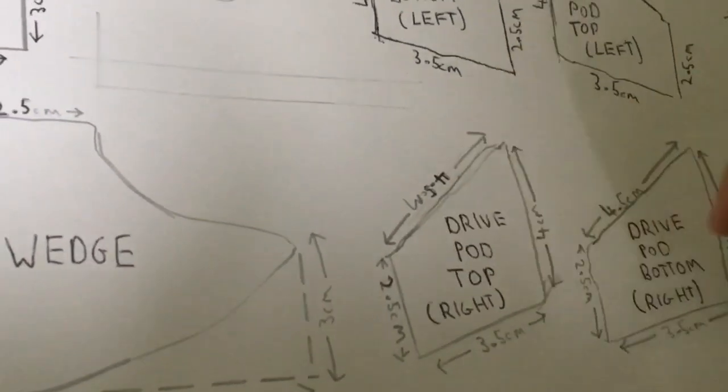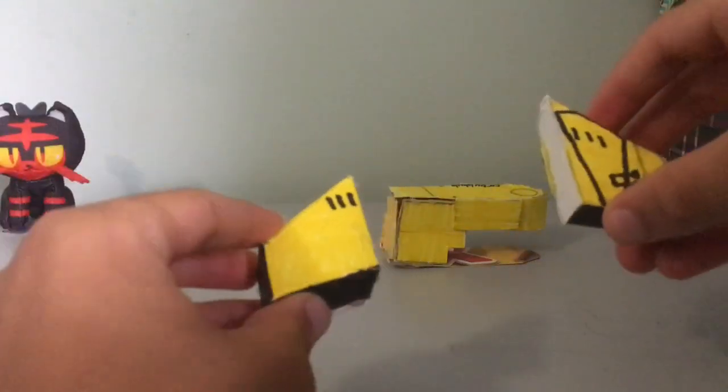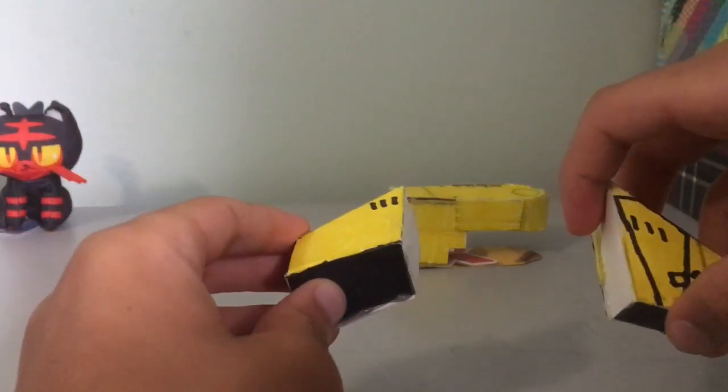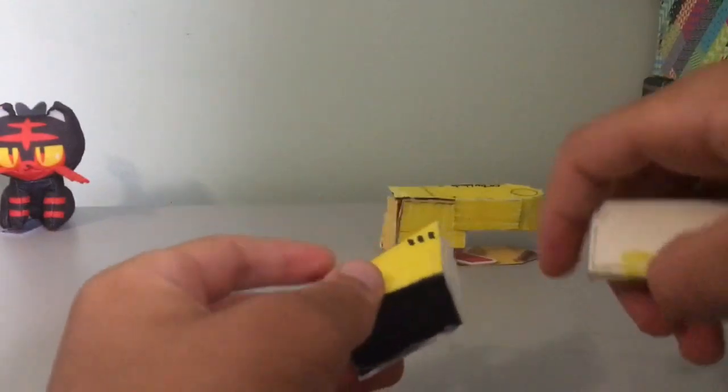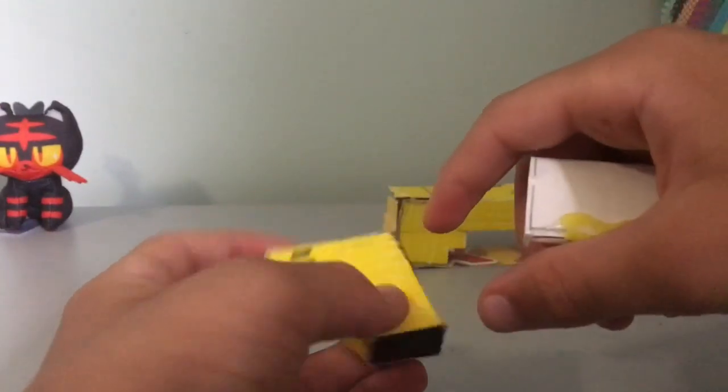They're just going to attach the top and bottom together, and make it a 3D shape. I haven't drawn out these pieces individually to show you, because it's pretty simple to see where they go. The rectangles, of course, correspond to their correct length at each side of the drive pod.